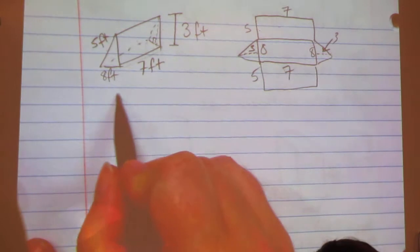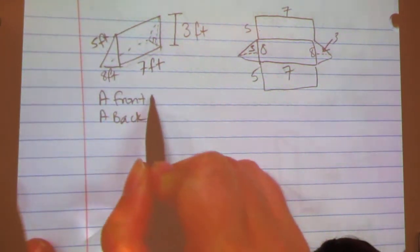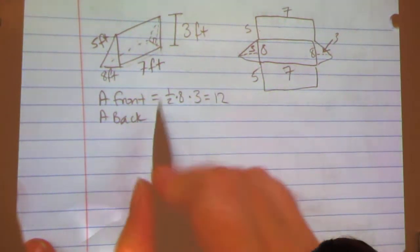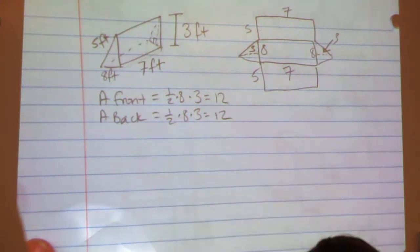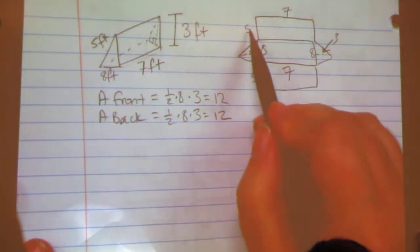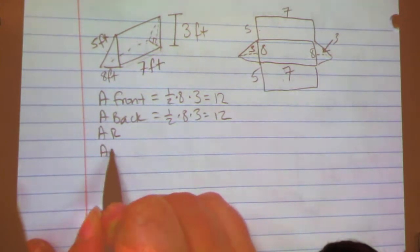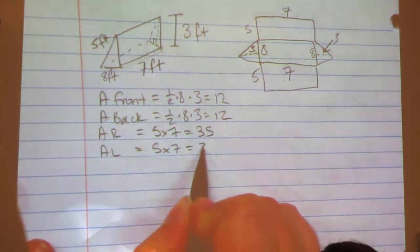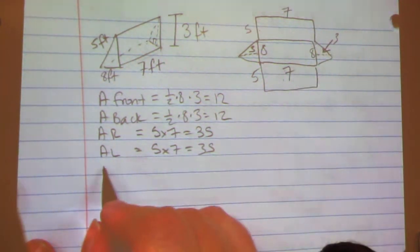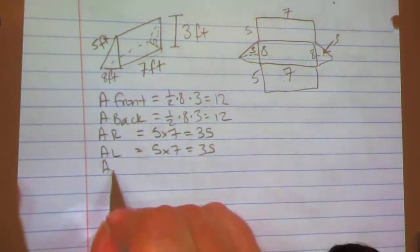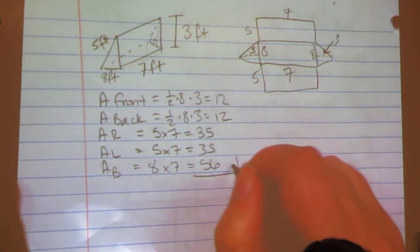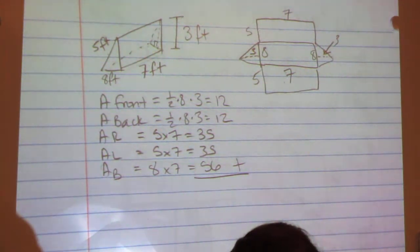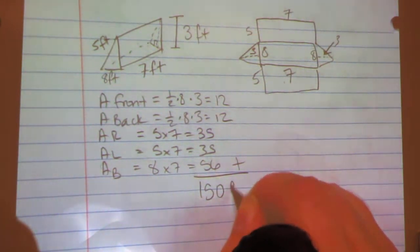So I find the area of the front and the area of the back, which is just half my base, which is 8, times my height, which is 3. 8 times 3 is 24. Half of 24 is 12. The back and the front are identical. Then I do my rectangles. I have two that are 7 by 5. So the area, I'm going to call this the right and the left, is a rectangle 5 by 7, which is 35, and 5 by 7, which is 35. And then I just have my bottom panel here, which is 8 by 7. So the area of the bottom is 8 by 7, which is 56. I'm still doing surface area, so I'm going to add it all together. And my surface area is 150 square feet.